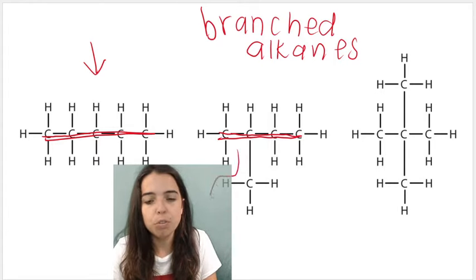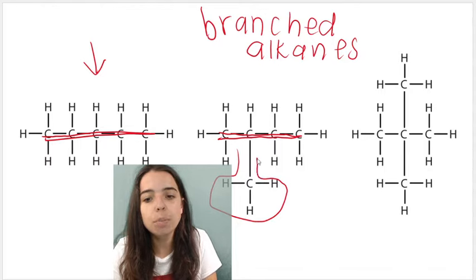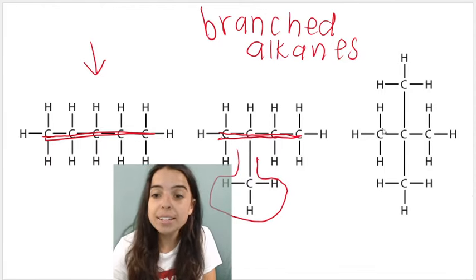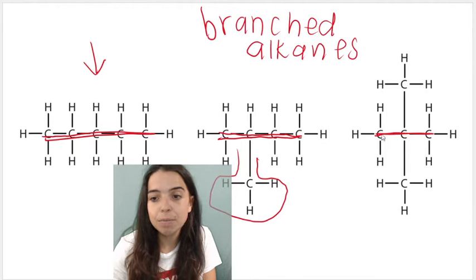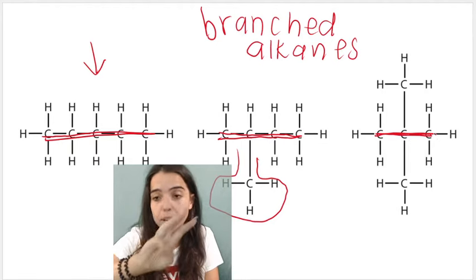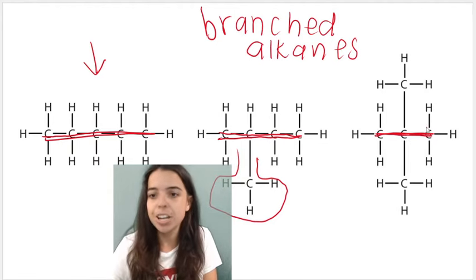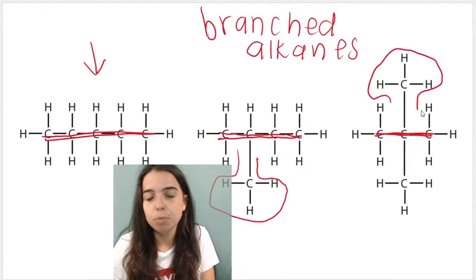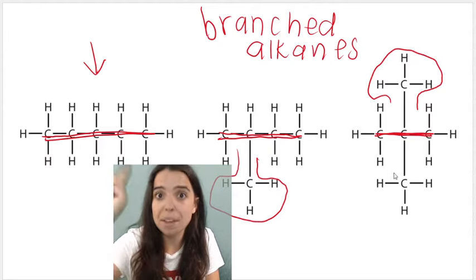This over here is what we refer to as an alkyl group. It is a side branch. If we look at the alkanes on the right, this is the main chain. Three continuous carbons making up our main chain. And then we can see that this is a side branch, also referred to as an alkyl group in this case.